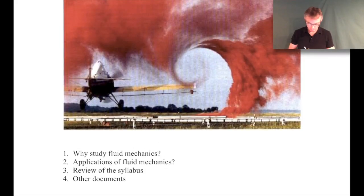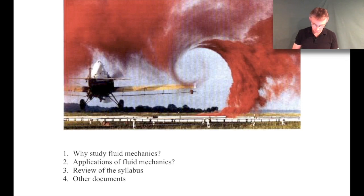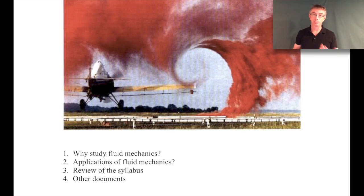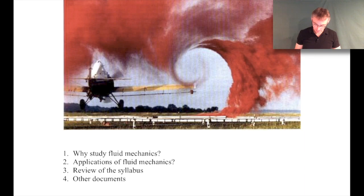On your screen is a flow visualization photograph of an aircraft flying very close to the ground. You can see a beautiful wingtip vortex coming off the aircraft. They placed smoke bombs on the ground, released red smoke, and had the plane fly through it to visualize the vortex. The vortex forms because the bottom of the wing has high pressure and the upper side has lower pressure — that pressure difference creates lift. The high pressure air sneaks around the wingtip into the low pressure region, producing that vortex.